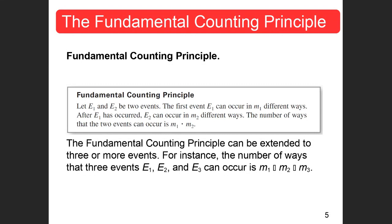That can be a bit confusing — what does that mean? Let's say we have a dice and a coin. There are six sides to a dice, so you could end up with a 1, 2, 3, 4, 5, or 6 — six different ways that can happen. And a coin has two different ways: it could end up being heads or tails.